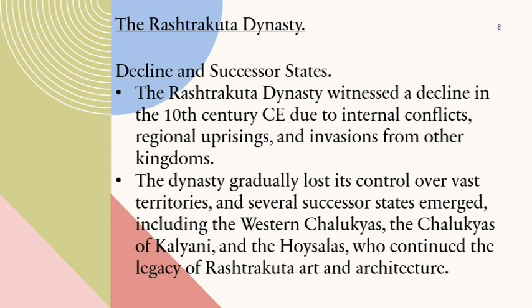Decline and Successor States: The Rashtrakuta dynasty witnessed a decline in the 10th century due to internal conflicts, regional uprisings, and invasions from other kingdoms. The dynasty gradually lost its control over vast territories, and several successor states emerged, including the Western Chalukyas, the Chalukyas of Kalyani, and the Hoysalas, who continued the legacy of Rashtrakuta art and architecture.